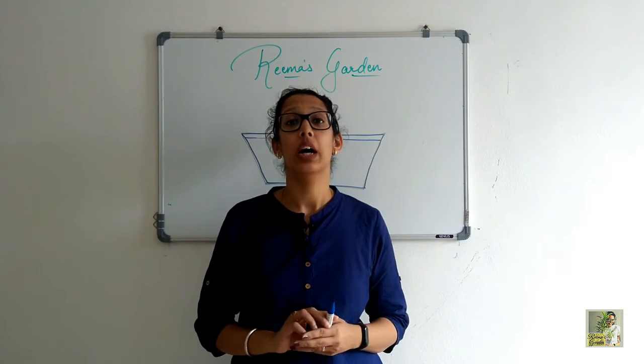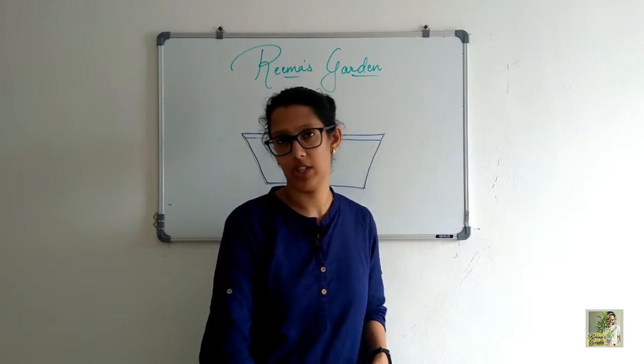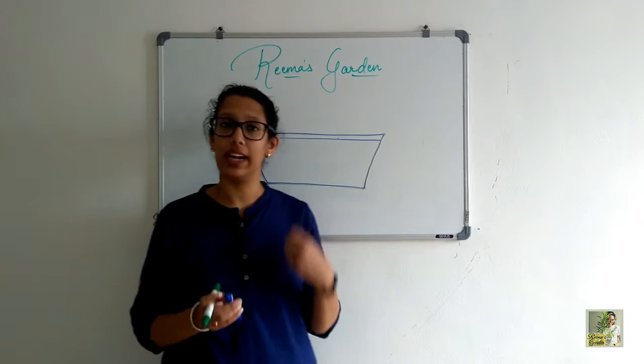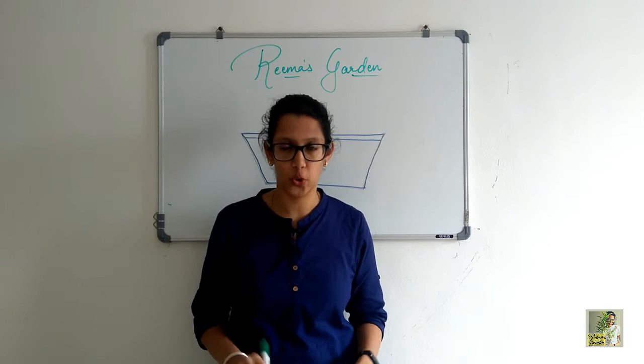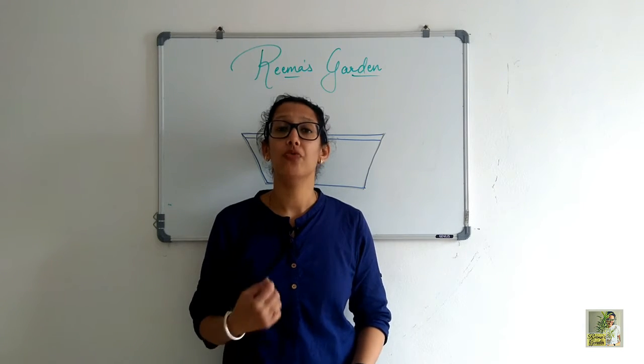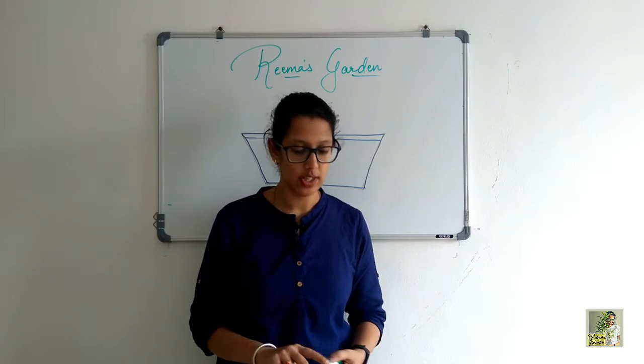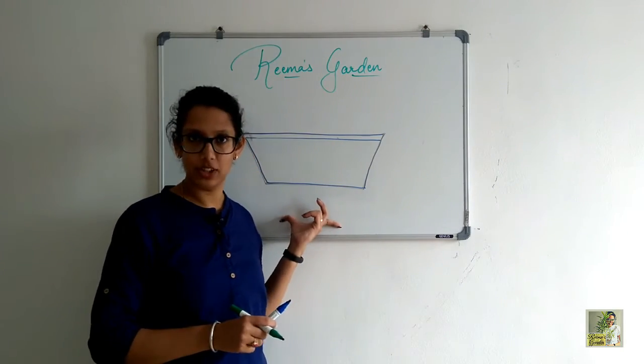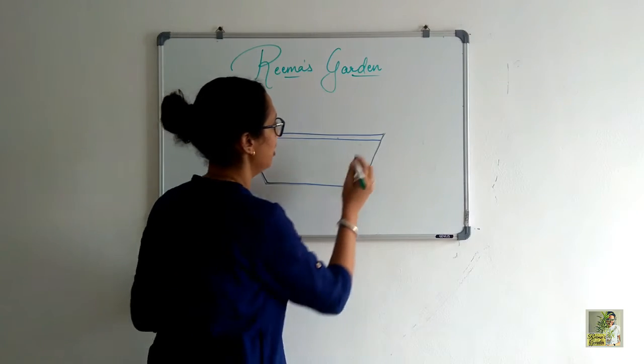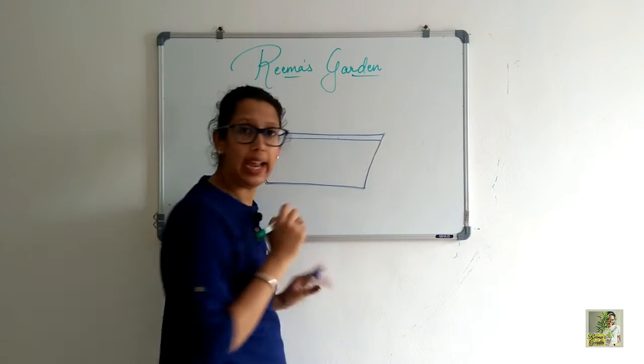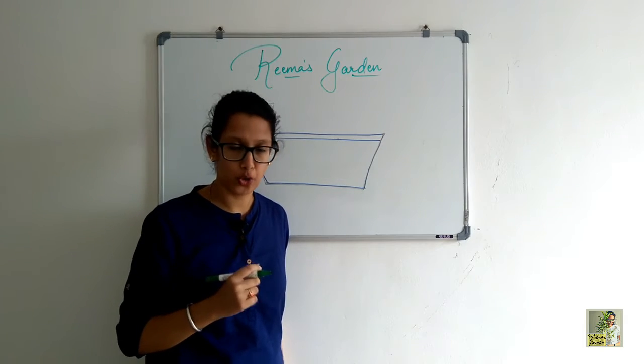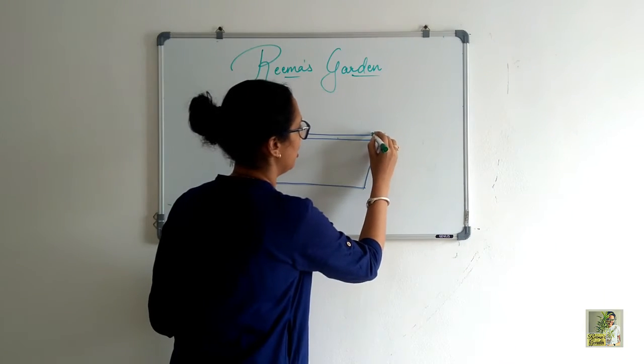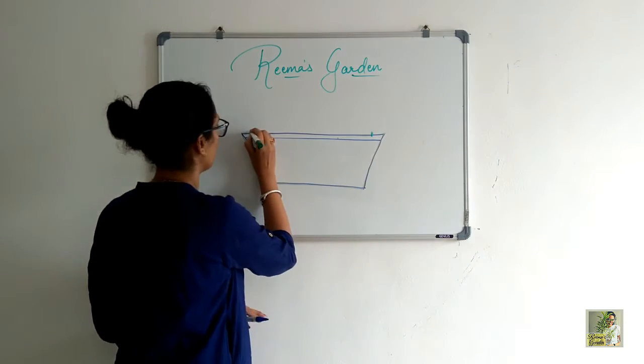Now, whenever possible, opt for a rectangular container or grow bag. Why do I say this? Just hear me out. If you have a rectangular container, you can grow any type of climber or creeper in the extreme corners. You all know there are two ways of growing them, whether you have gourds or anything.